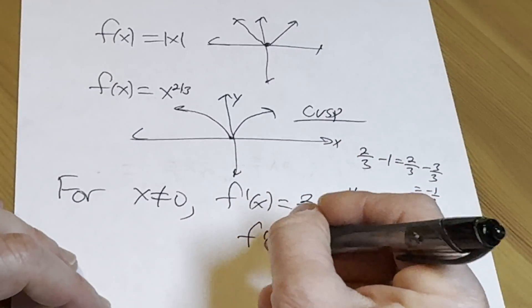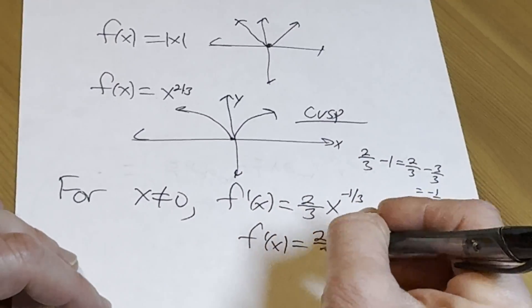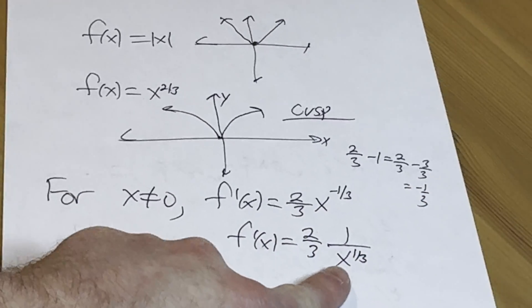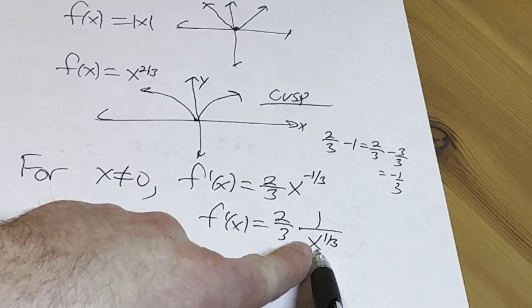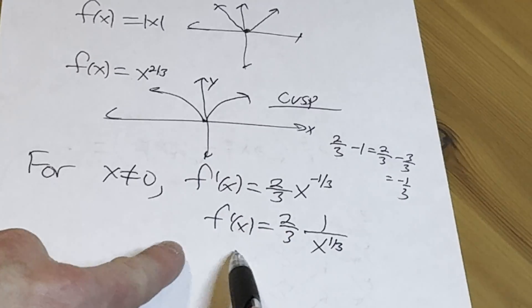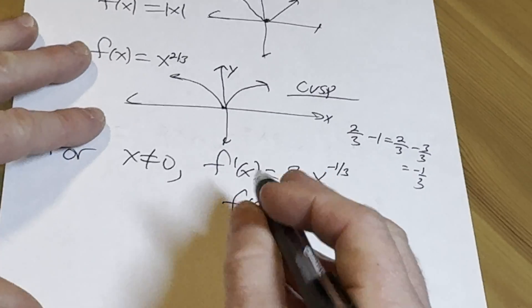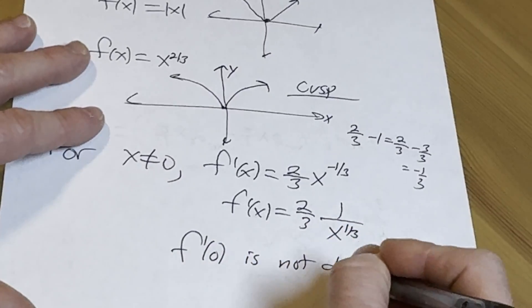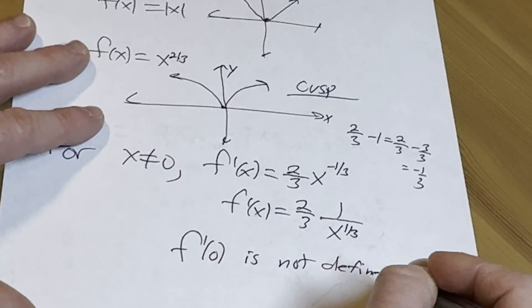But look at this. This function, right? You see this function. Well, the problem with this function is that this function is not defined at zero. So that means that the derivative is undefined. So this bad boy is not defined. A derivative is undefined. It doesn't exist.